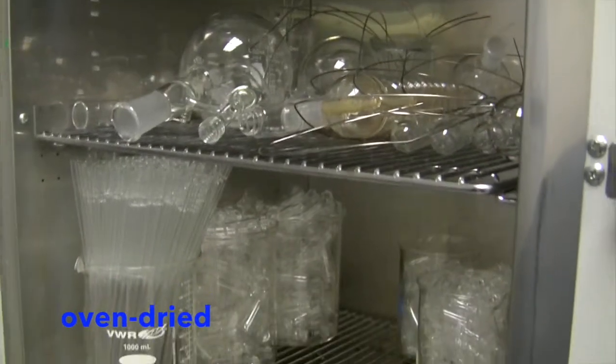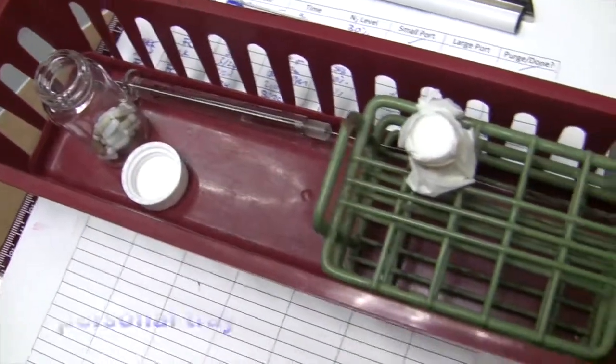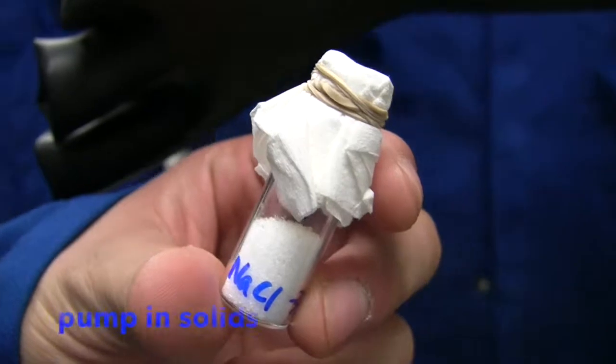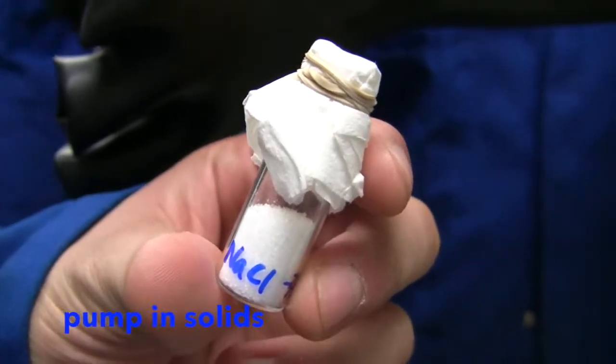When pumping things into the glove box, use oven dried glassware and a personal tray. You can also bring solids in using a chem wipe to cover the material.